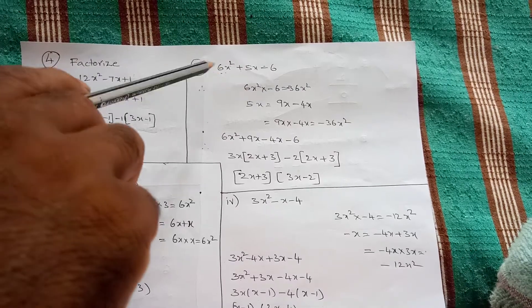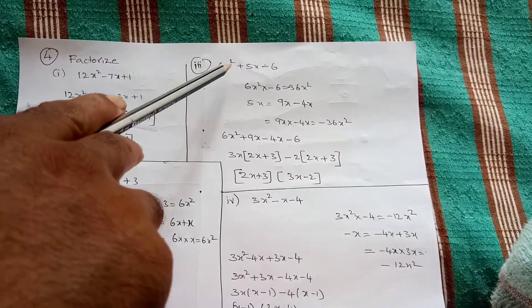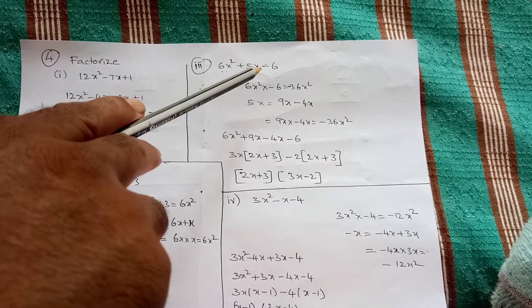Hello students, this is the third bit. 6x square plus 5x minus 6.